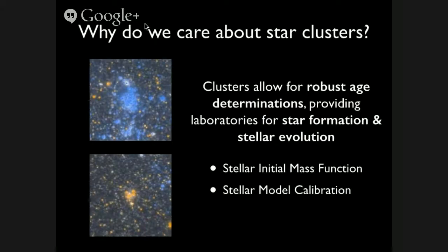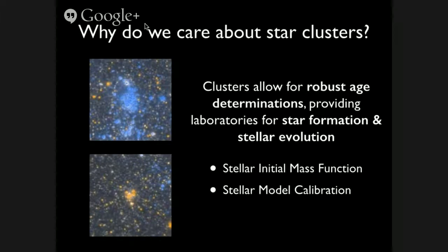The second aspect of why we care about star clusters is that clusters give us a really well-calibrated age for a particular set of stars. This lets us go in and assess the shape and form of the stellar initial mass function, without the degeneracy between star formation history and the slope of the mass function. We can also use these sources for stellar model calibration — for instance, if we have seven red supergiants in one of these moderate-mass clusters, we can determine the lifetimes for these rare phases of stellar evolution as a function of age.